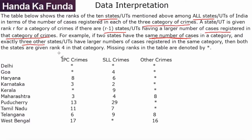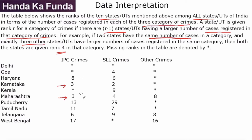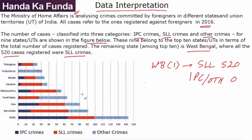For example, if there are three states above two tied states, then both of them will be given rank 4. In IPC, Karnataka and Maharashtra both appear to be at 3.3, meaning there will be two states above them in the IPC category. Let's figure out which two.